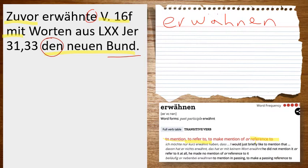So you kind of have the basic structure then: "verse 16 and following refers to the new covenant." And then you just have to put in your prepositional phrase, which gives you some adverbial modification saying how it refers to it — it refers to it with words out of or from Septuagint Jeremiah 31, 33.